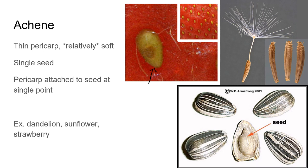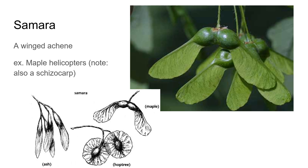An achene has a thin pericarp — we can't really distinguish the individual layers; it's just a thin single coating. Usually it's relatively soft, but in the case of a sunflower seed that coating is a little bit harder, though you can still crack it open. There's a single seed inside and the pericarp is attached to that seed at just a single point, so we can fairly easily peel the pericarp off. Examples of achenes are found on the outside of a strawberry, at the base of a dandelion, and sunflower seeds.